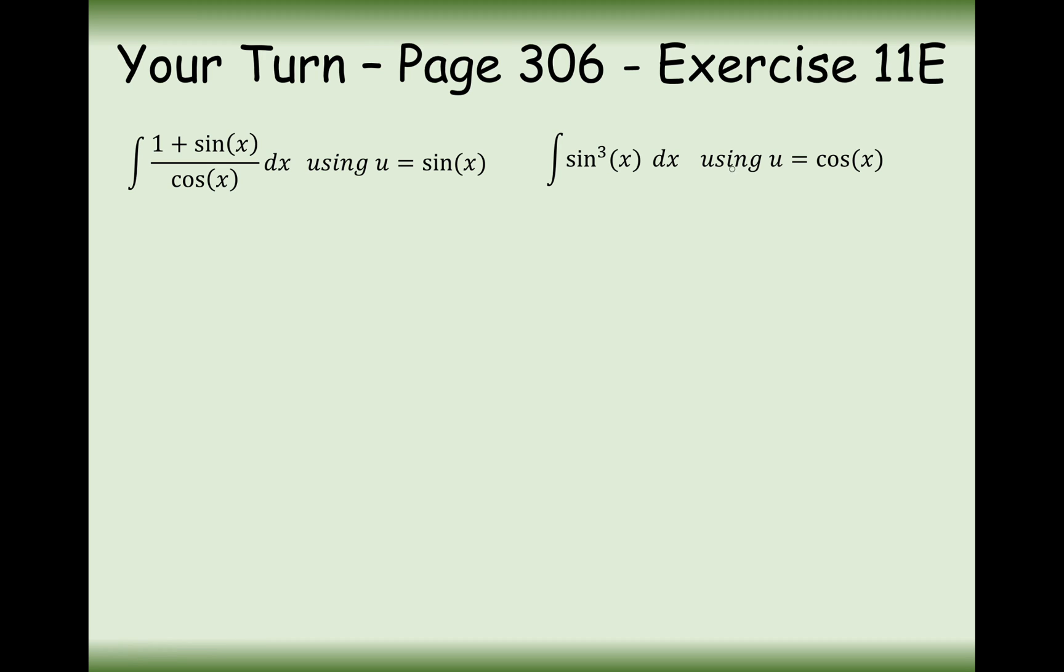It's sine cubed where u is cos x. Now, how are we going to pull out a cos from this function here? Well, we can treat sine as sine x times sine squared x. And then replace sine squared with 1 minus cos squared.